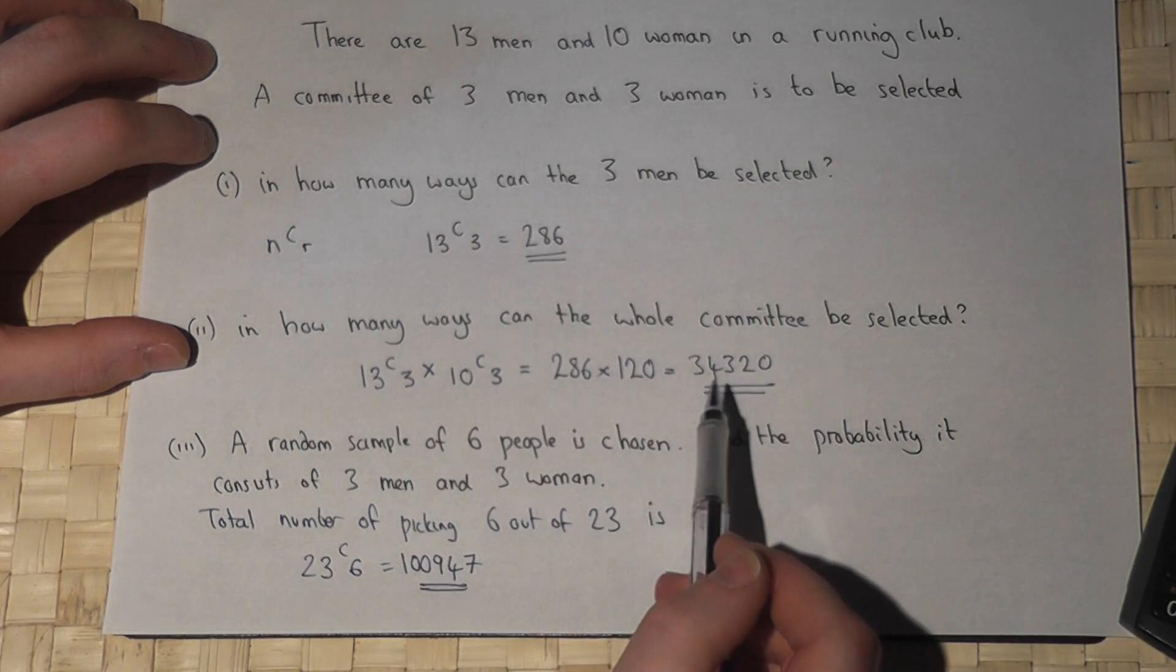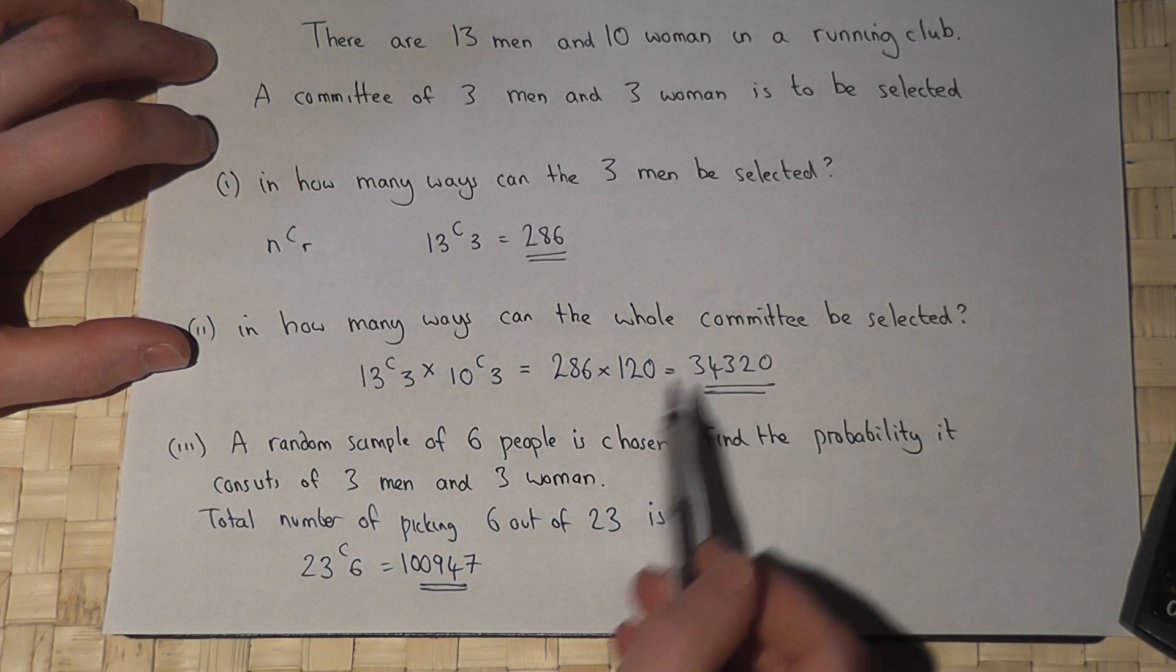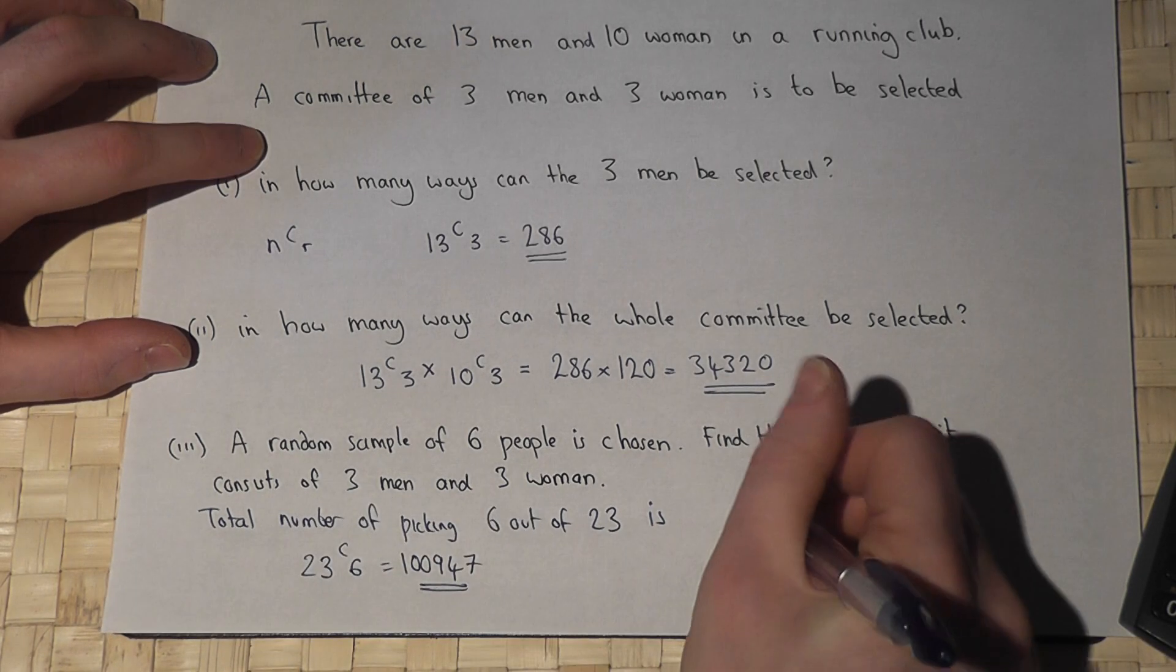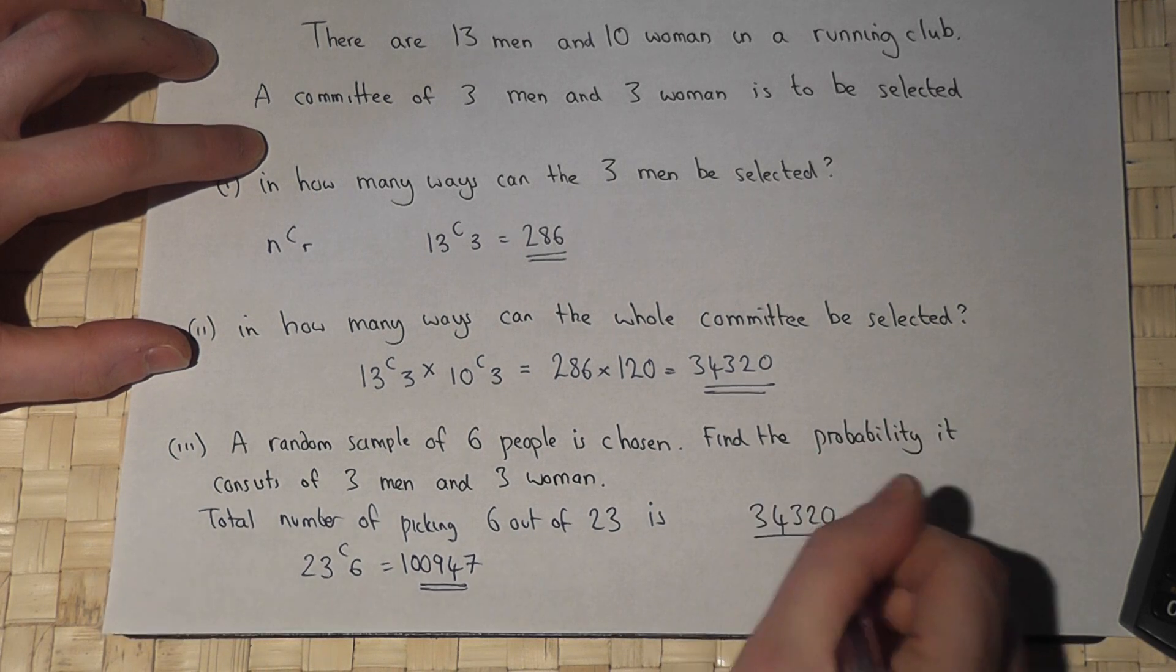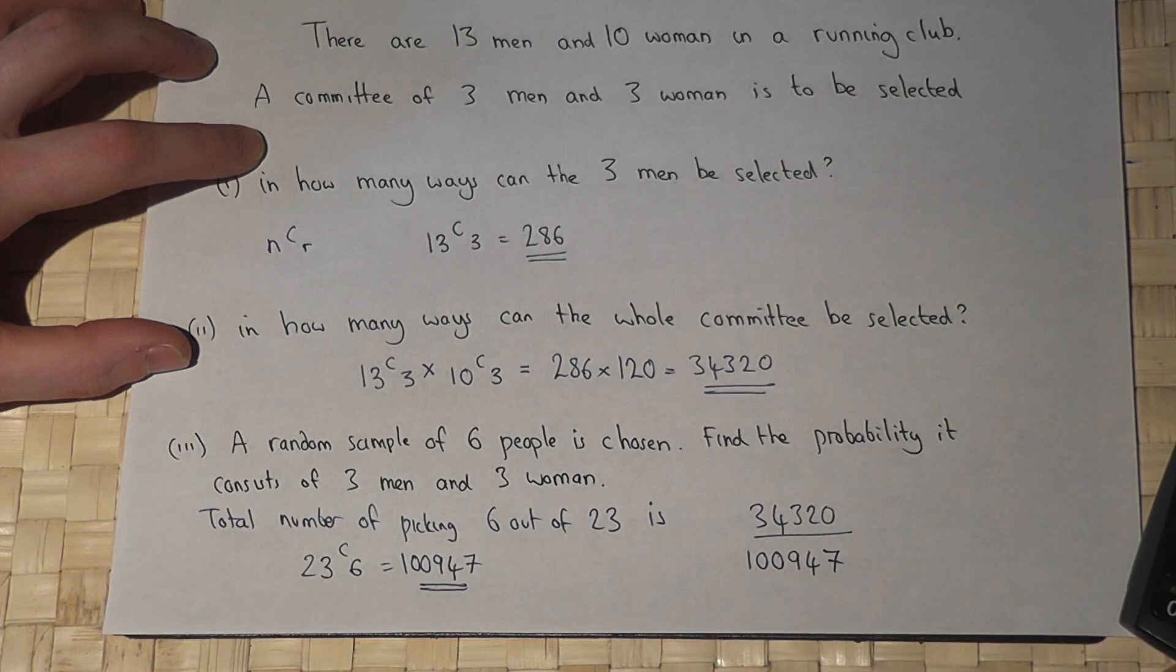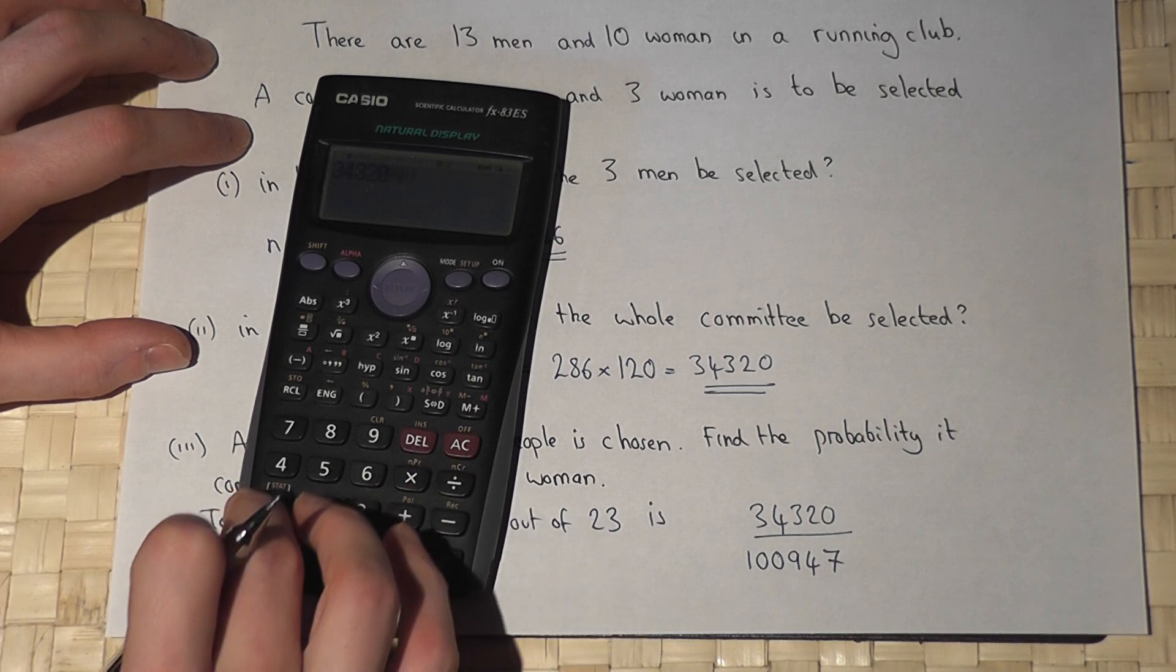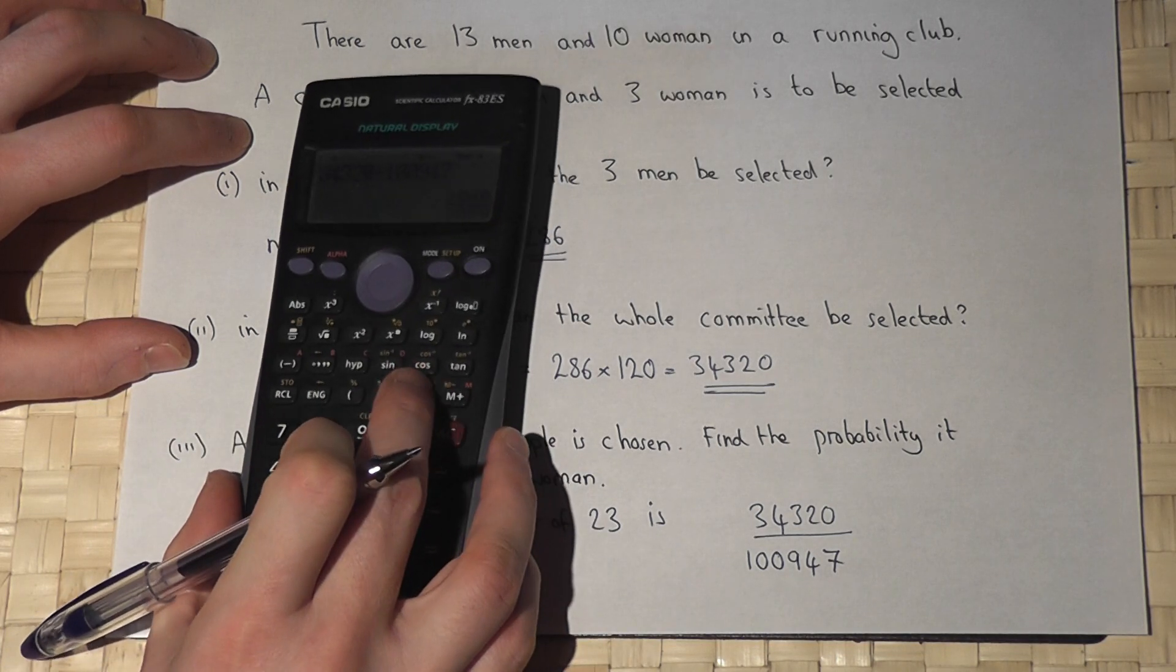Out of these, 34,320 satisfy the given condition. Therefore, the chance it consists of three men and three women is 34,320 over 100,947, which works out at 0.340 to three significant figures.